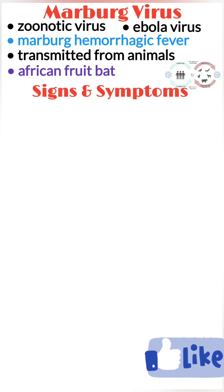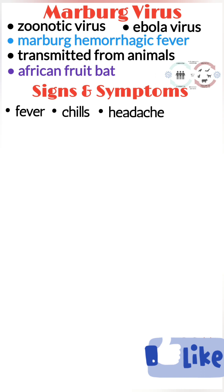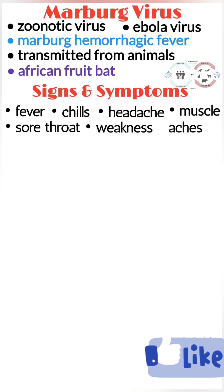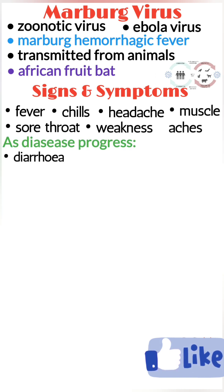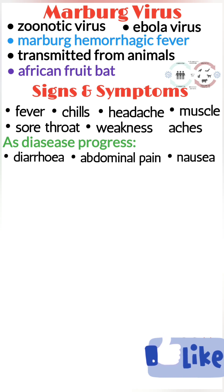Early signs and symptoms of MVD typically consist of fever, chills, headaches, sore throat, weakness, and muscle aches. As it progresses, diarrhea, abdominal pain, nausea, vomiting, rash, and severe hemorrhagic signs and symptoms may also occur.